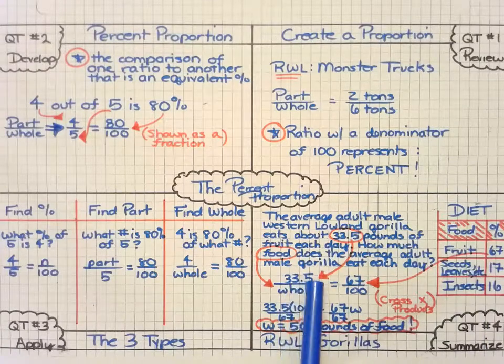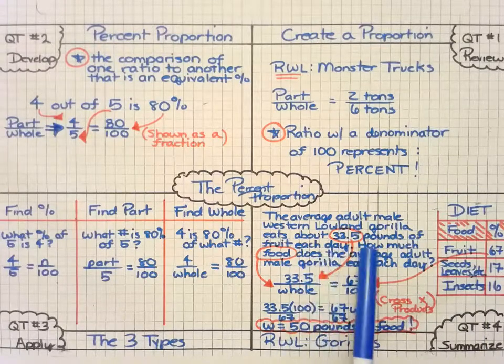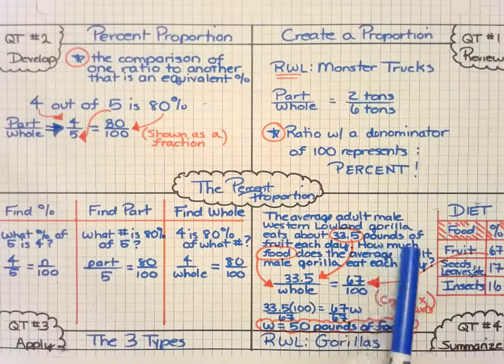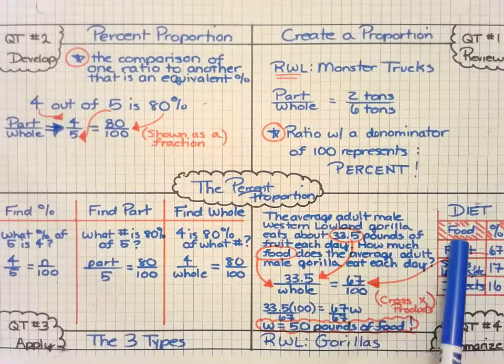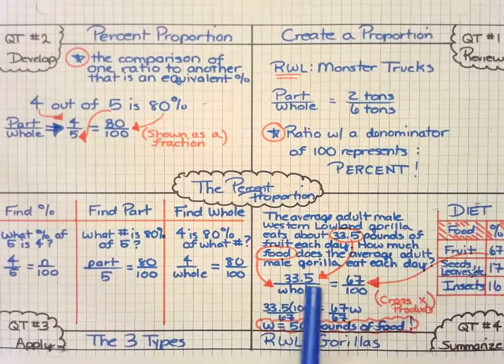That's why I want to put the 33.5 on top. And then if I look at the rest of the question, it says how much food. Well, food includes all of this, which would be the total. So that's what I'm looking for, the whole.